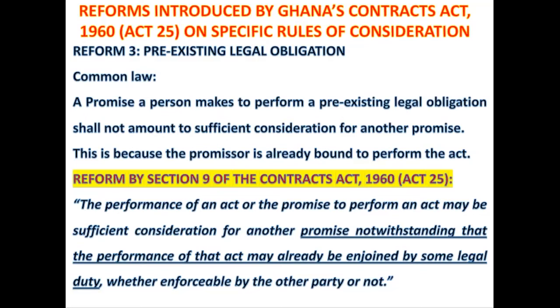Again: the performance of an act or the promise to perform an act may be sufficient consideration for another promise, notwithstanding that the performance of that act may already be enjoined by some legal duty, whether enforceable by the other party or not. So it means under Section 9 of Ghana's Contracts Act of 1960 Act 25, the performance of a duty that you are already bound to perform shall suffice as good consideration, even though you are already bound by law to perform that particular duty.